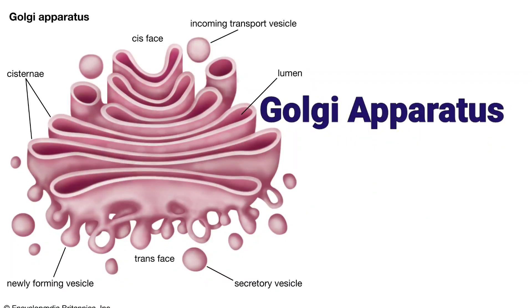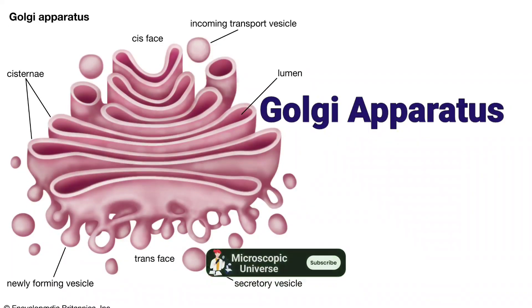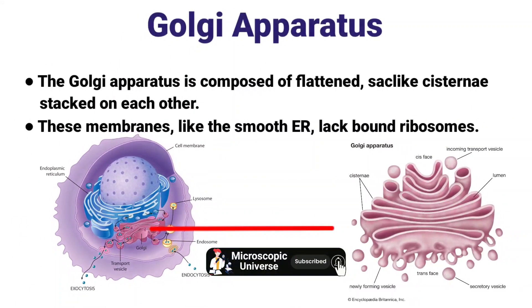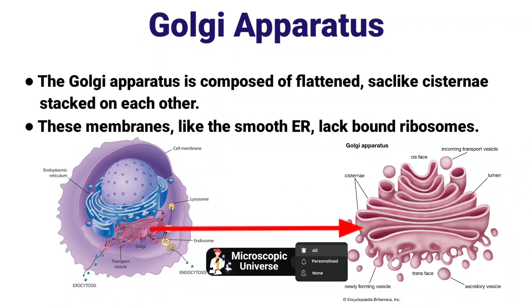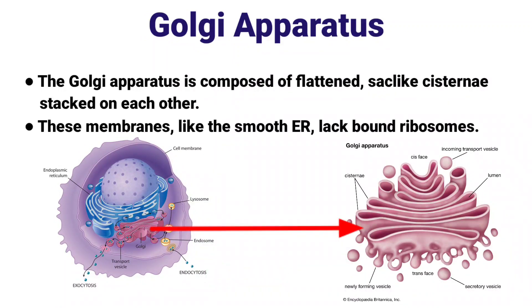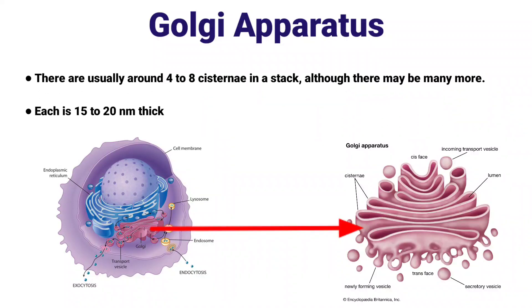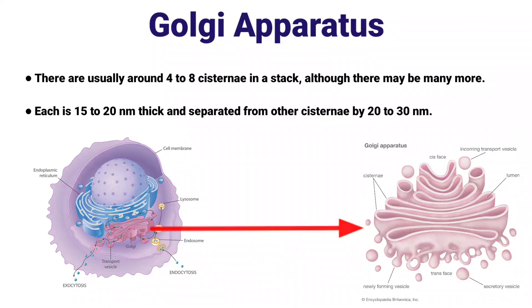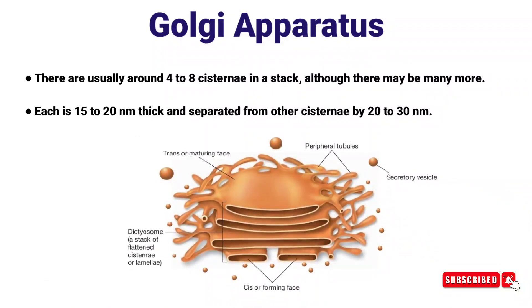Hi everyone, today we will learn about the Golgi apparatus. Coming to the structure of Golgi apparatus: it is composed of flat sac-like cisternae stacked on each other. These membranes, like the smooth endoplasmic reticulum, lack bound ribosomes. The Golgi apparatus has four to eight cisternae in a stack, although there may be many more.